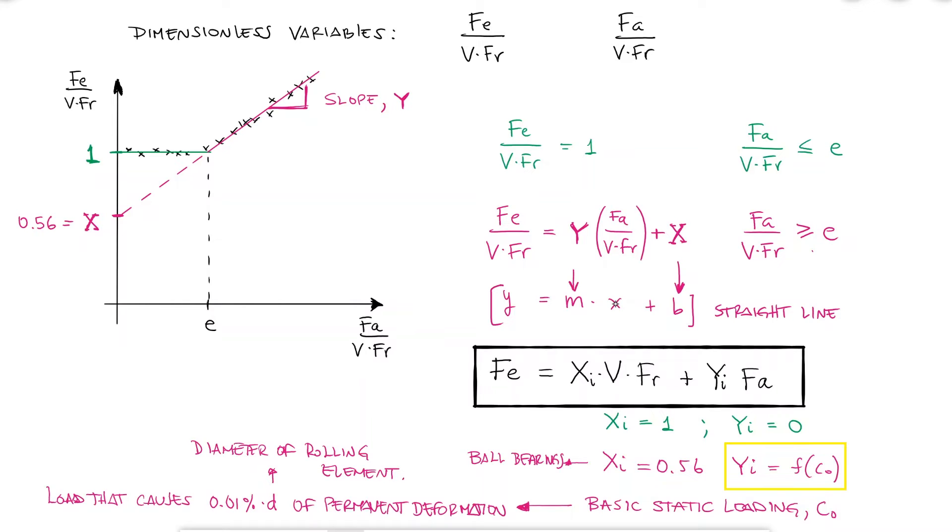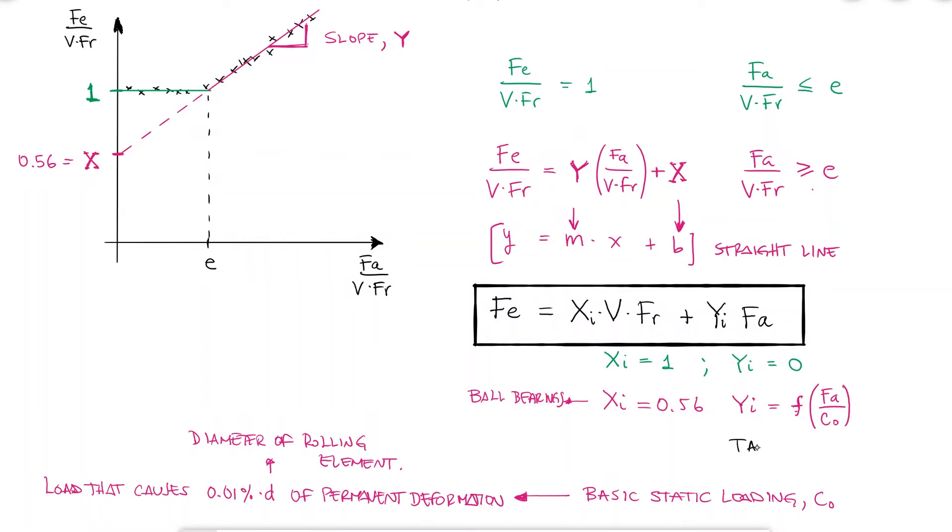The capital Y value, the slope of the relationship between the Y and the X axis of the plot, will depend on the value of FA over C0 and you can find tables where the capital Y value is listed. These values and tables can be looked up by searching for equivalent radial load factors of ball bearings.